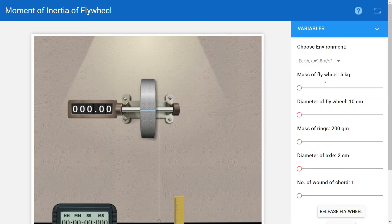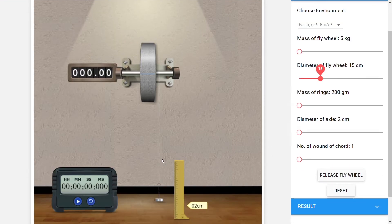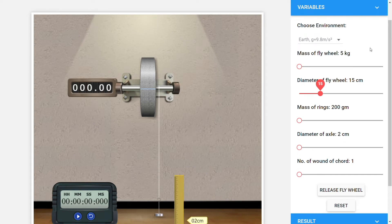Next thing you will be doing is setting up the values of the variables. Here variables are mass of flywheel, diameter of flywheel, mass of rings, diameter of axle, and number of rounds of cord. You can adjust the slider like this and set the values. Now for starting the experiment you need to click the button 'Release Flywheel.' Once the mass releases from the peg, you will be noting the number of revolutions from this instrument on the left side of the axle and the time in the stopwatch. By doing this you will complete one observation.